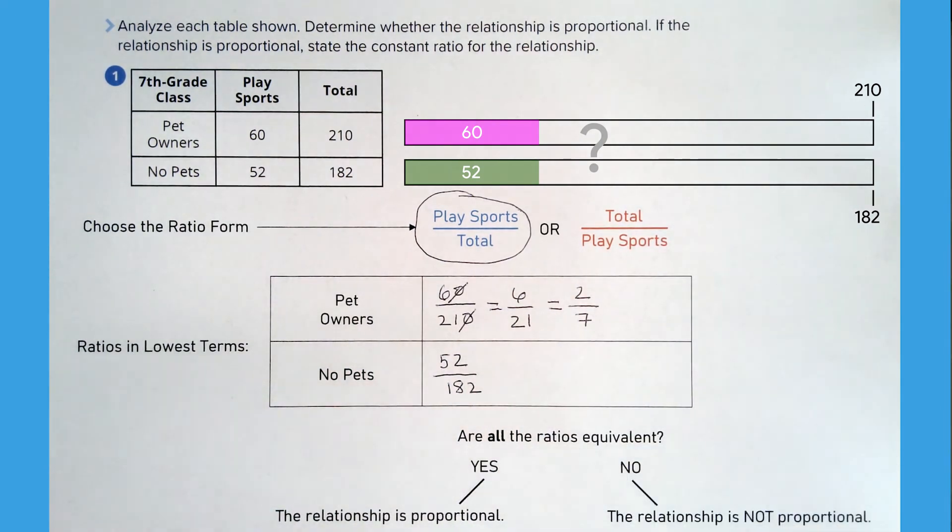Then I can divide both numerator and denominator by 13 to get 2 over 7.